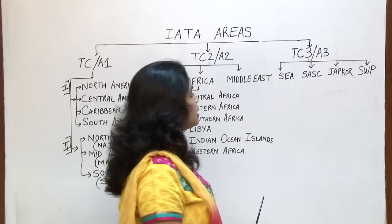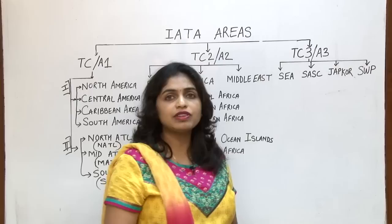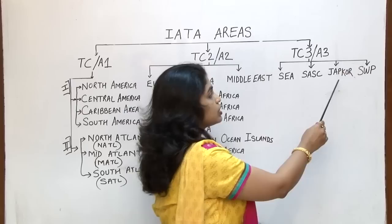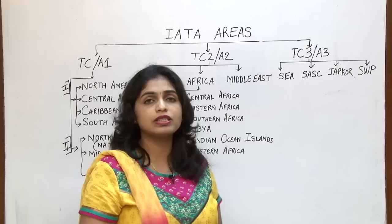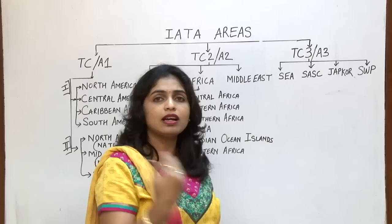The next sub area is JAPCOR, which stands for Japan and North and South Korea — these are the countries included in this particular sub area. The last group is Southwest Pacific — ideally Australia and its neighbours. That is how the sub areas are divided in IATA area 3.